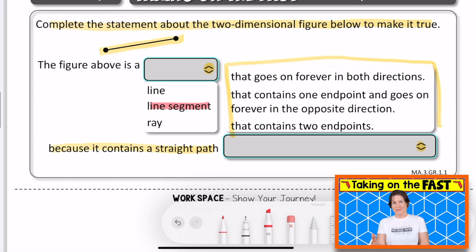It stops because it has two endpoints. So that contains one endpoint and goes forever in the opposite direction, what would that be? A ray, right? Or because it contains a straight path that contains two endpoints. Yes. So we would select or click on those two answer choices and that is how you solve this problem.